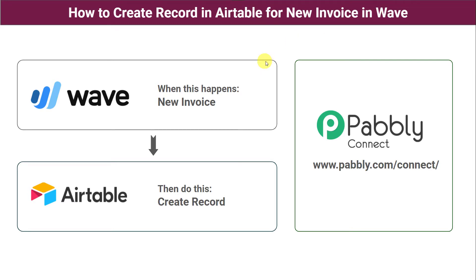The idea here is that whenever a new invoice is created in WAVE, automatically the same invoice details should be created as a record in Airtable also. But the question is how to do this, because there is no direct connection between WAVE and Airtable.